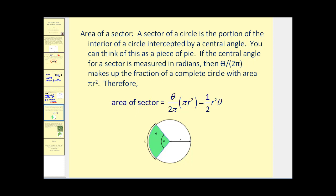Let's take a look at the area of a sector. A sector of a circle is the portion of the interior of a circle intercepted by a central angle. Here we have a sector colored green. You can think of this as a piece of pie. If the central angle for a sector is measured in radians, then θ divided by 2π makes up the fraction of a complete circle with area πr². Therefore, the area of a sector is θ/(2π) times πr². The π's simplify out and we're left with ½r²θ, where θ must be in radians.